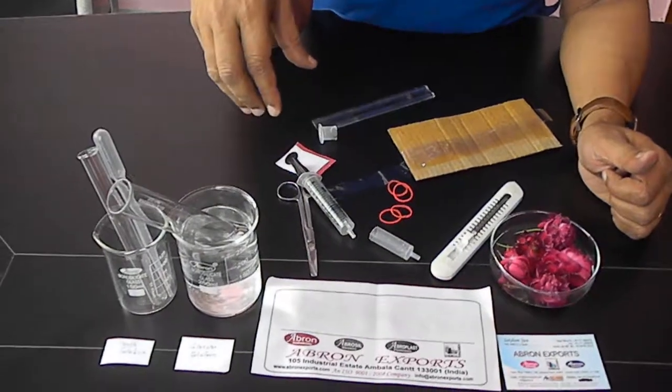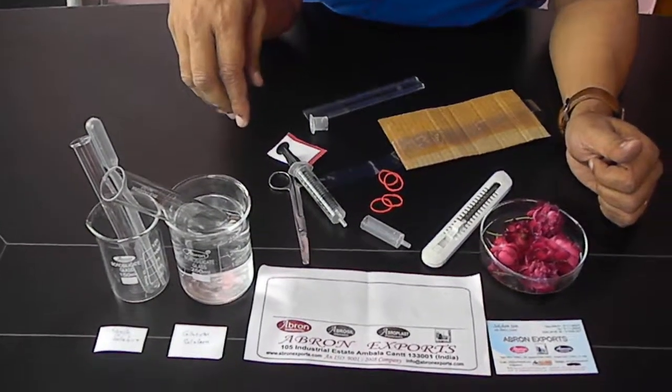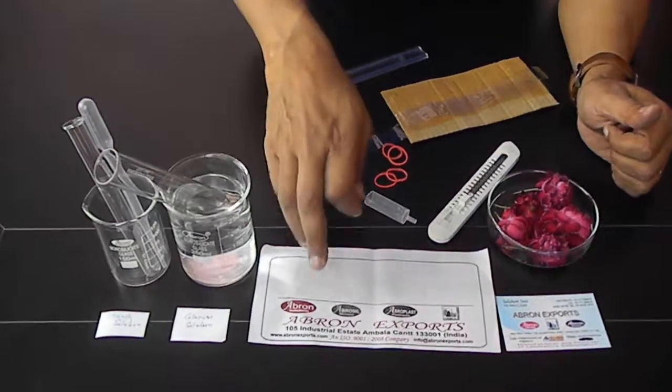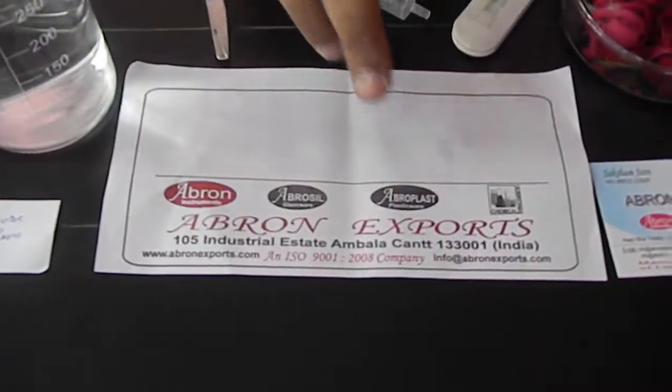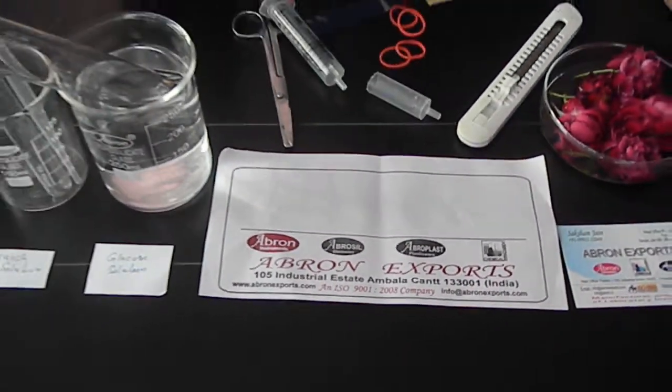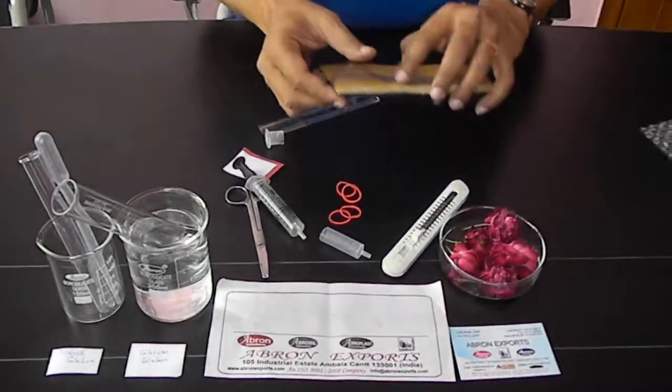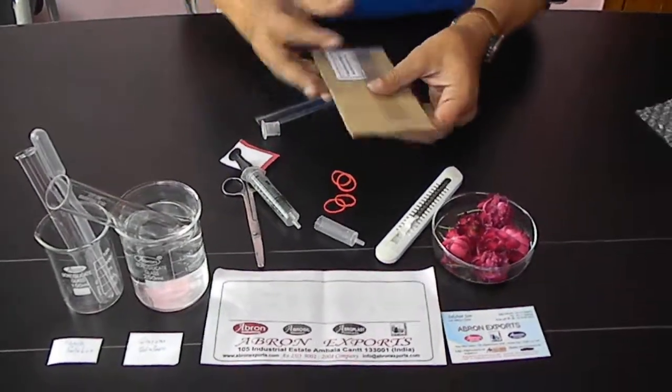We have seen it on YouTube. I will send you that link also. Do the experiment and buy from Abron Exports. This is the whisking tube semi-permeable membrane. Thank you very much.